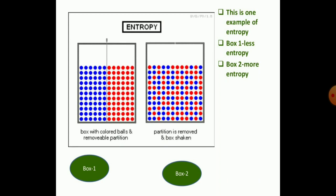In box one there is less entropy, and in box two there is more entropy. The box with colored walls and removable partitions clearly differentiates the entropy of the two substances.